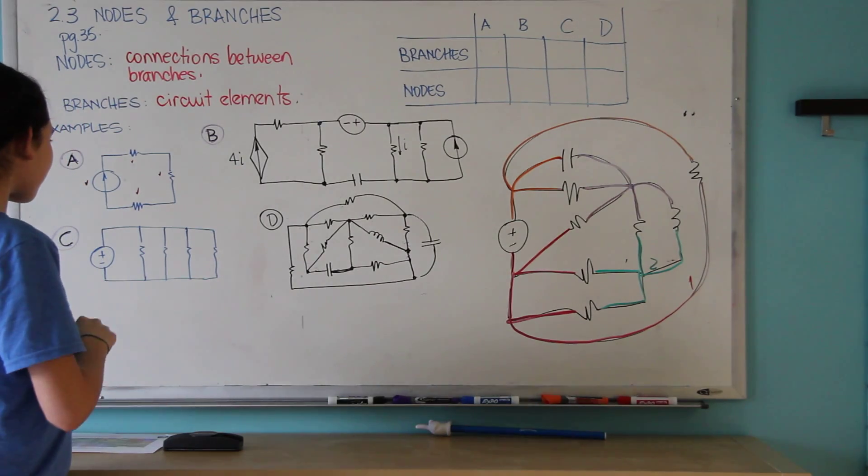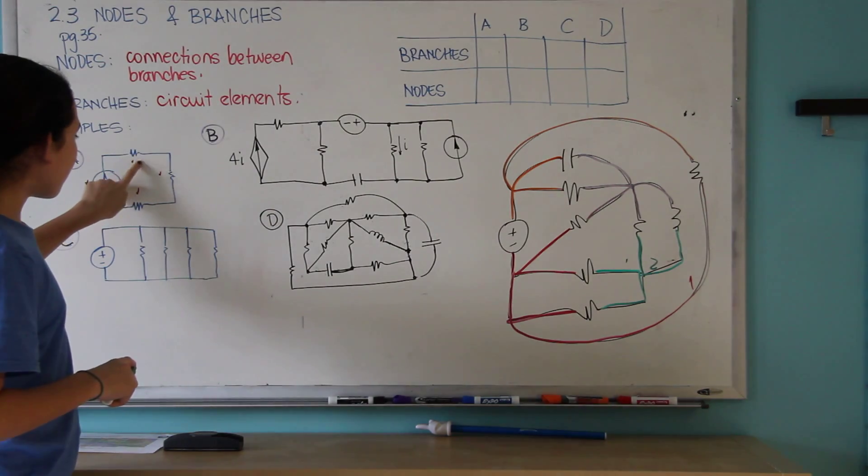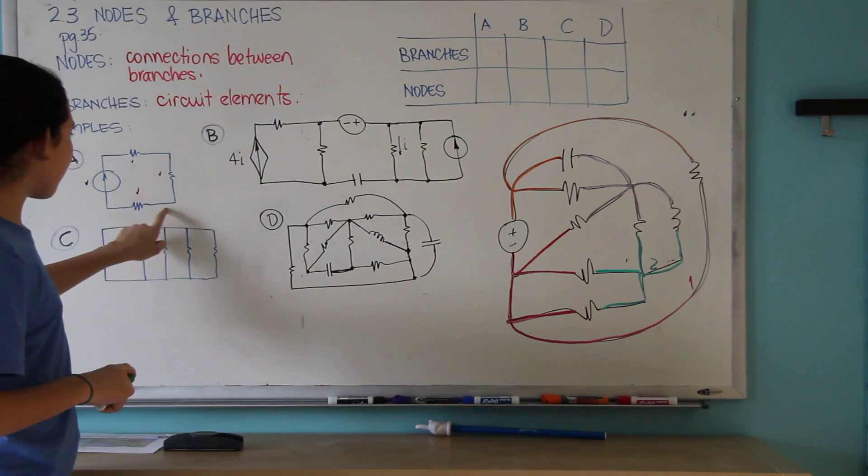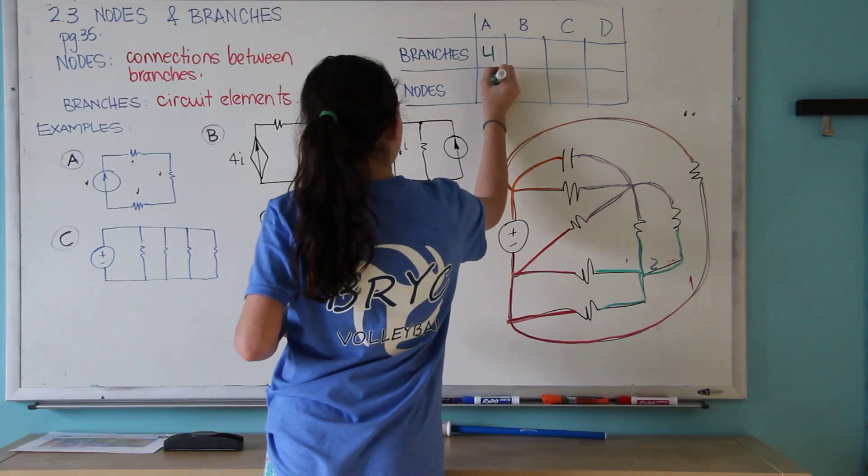When it's really easy, you can tell that this has four branches and four nodes. So just put four and four here.